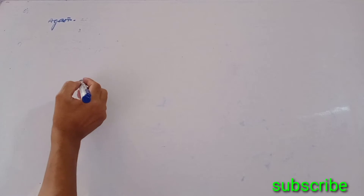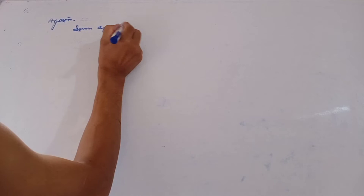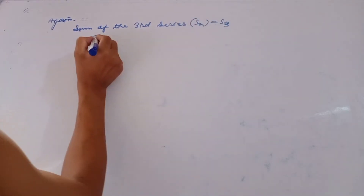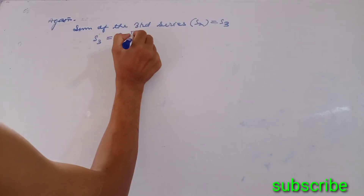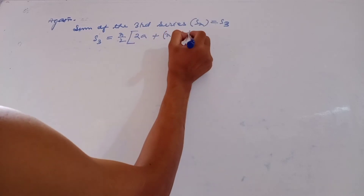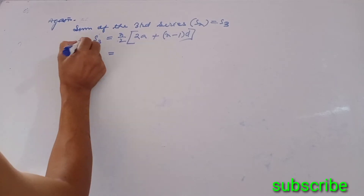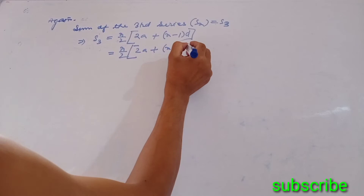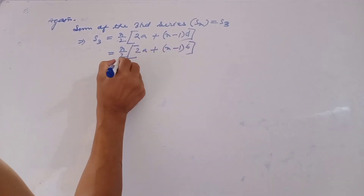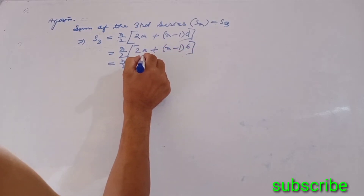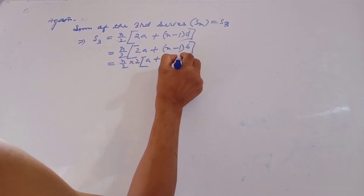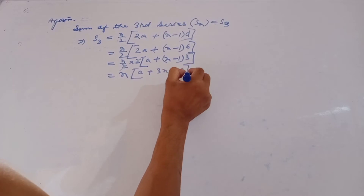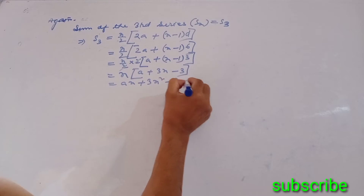Again, sum of the third series. Sn equals S3. S3 equals n by 2 times (2a plus n minus 1 times D), with D value 6. This simplifies to na plus 3n squared minus 3n. This is equation number 3.